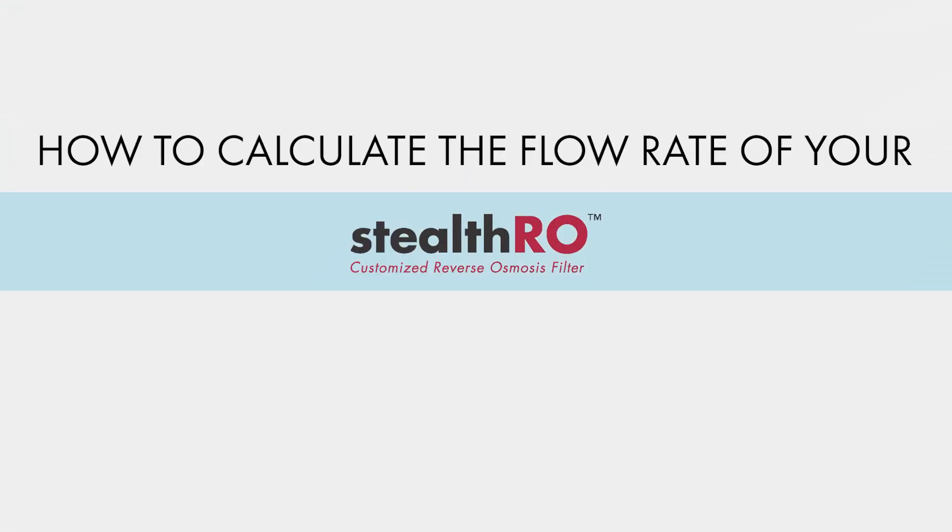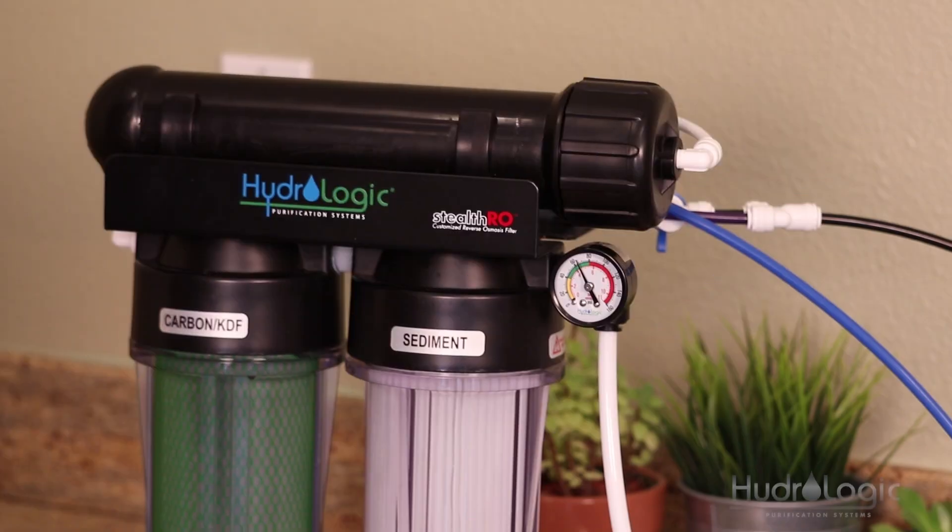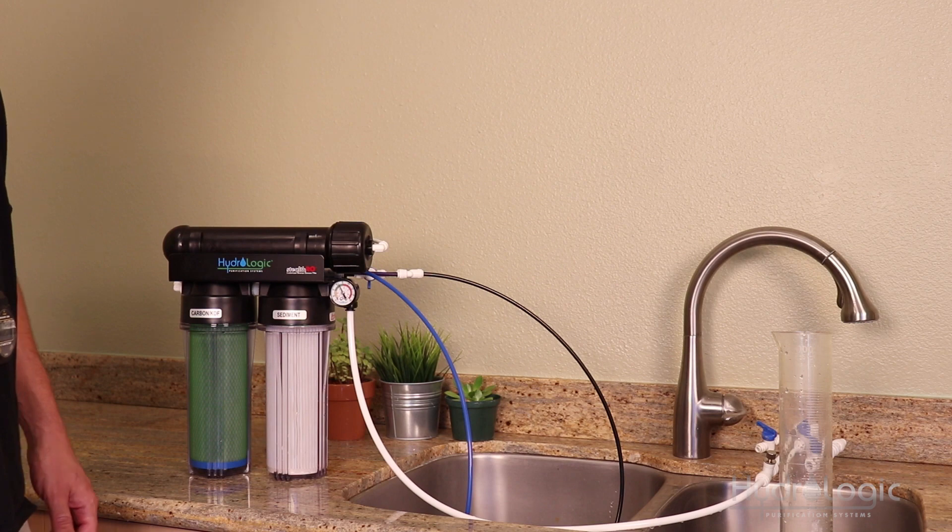Today we're going to show you a quick and easy way of calculating the flow rate of your reverse osmosis system. I have with me a Stealth 150 gallon per day RO unit, but you can use these same steps to calculate the flow rate of any reverse osmosis system.